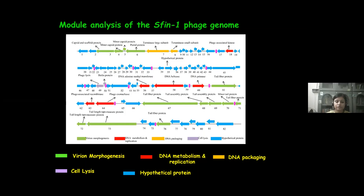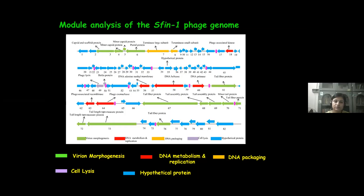The remaining genes are hypothetical proteins with no indicated functions in bioinformatic analysis. The SF-1 genome shows 91 to 92 percent sequence similarity with its closer counterparts, SHFL-1 phage and PSF-2 phage. Interestingly, these three phages — SF-1, PSF-2, and SHFL-1 — are isolated from different geographical locations, yet they have such close relationship in their genome sequences.